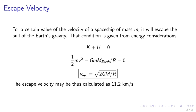Escape velocity. For a certain value of the velocity of a spaceship of mass m, it will escape the pull of the Earth's gravity. That condition is given from energy considerations: K plus U equals zero. In other words, K equals half mv squared plus the gravitational potential energy negative G m m_Earth over r equals zero. Thus, v_escape equals the square root of 2 G M over r. The escape velocity from Earth may thus be calculated as 11.2 kilometers per second.